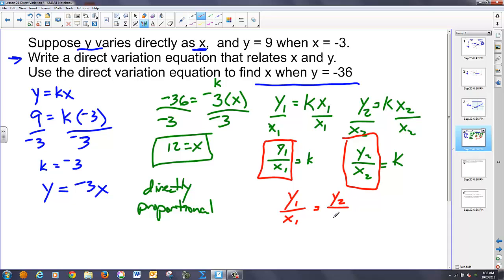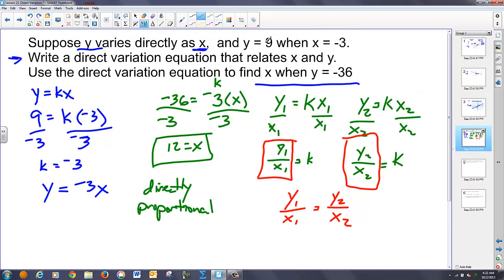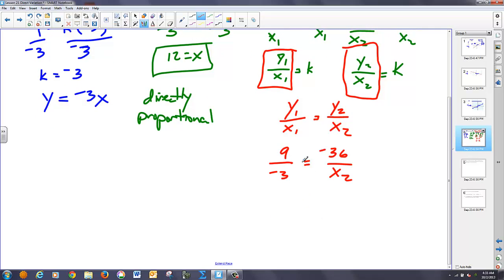And this is why I say a direct variation is also the same as directly proportional. So here's my proportion. Now, the problem said that I have two cases y equals 9 when x equals negative 3. That's case 1. And x is unknown when y is negative 36. That's case 2. So notice my proportion set up in case 1 and case 2. My first y was 9. My first x was negative 3. My second y was negative 36. And my second x was unknown.